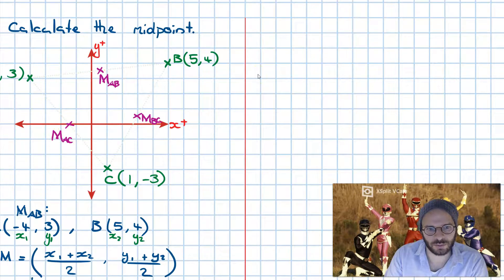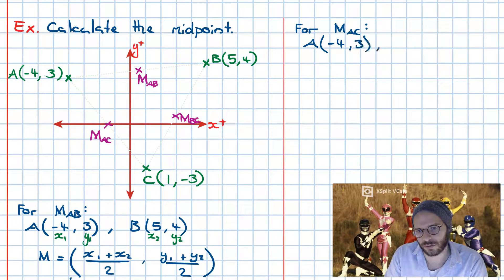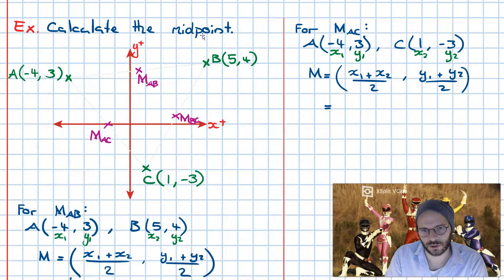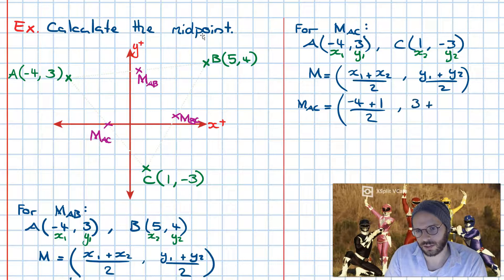All right, now going for the midpoint of AC. Our coordinates for A are going to be minus 4 and 3, and our coordinates for C are going to be 1 and minus 3. Defining x1 and y1. Defining x2 and y2. Now I'm going to write out my midpoint formula. Substituting in, we get minus 4 plus 1 all divided by 2, then 3 plus minus 3 all divided by 2.